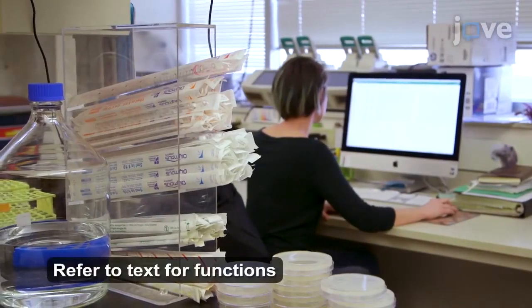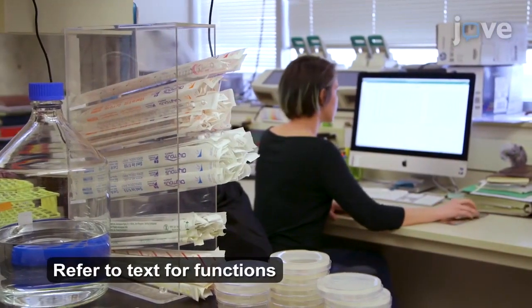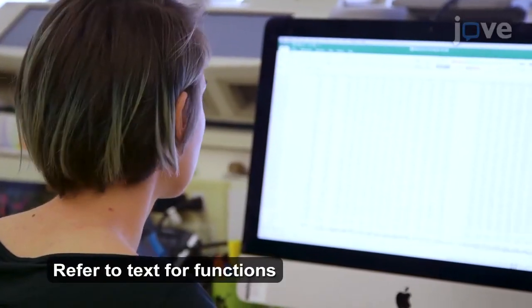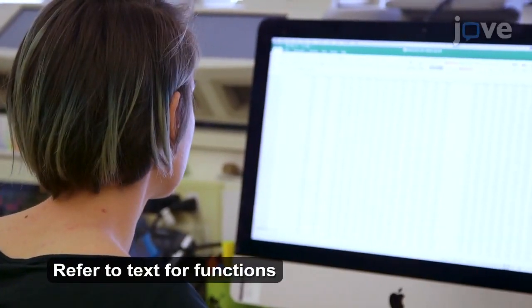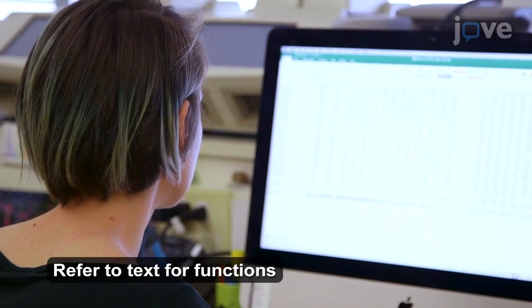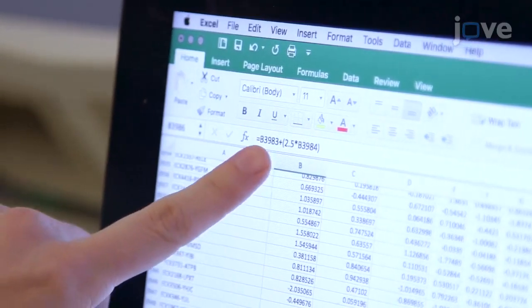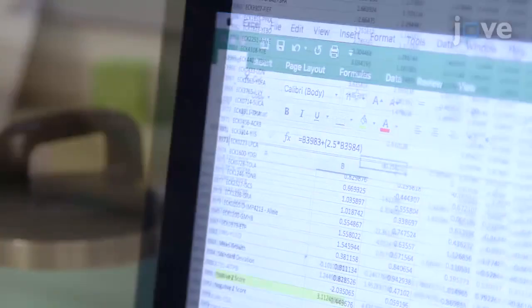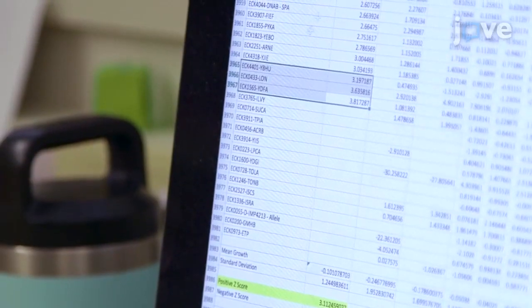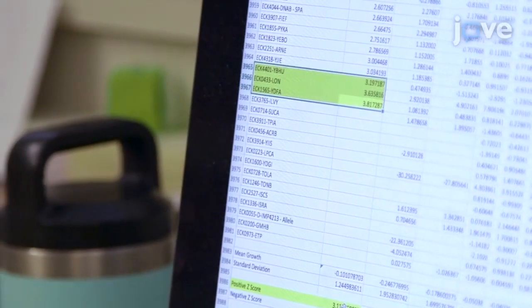Use a standard spreadsheet to calculate the mean growth score and standard deviation for all the mutants in the presence of a particular concentration of the small molecule added. Then calculate the Z-scores for each of the small molecule concentrations and highlight the gene mutants with significant Z-scores.